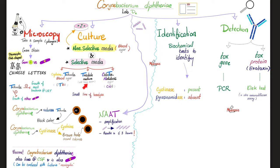We also have Tinsdale medium — you will need to add some horse serum to make it stable. The most practical medium to use is colistin nalidixic acid agar, or CNA. You can also use a DNA test — nucleic acid amplification test — to find diphtheria. For biochemical identification, Corynebacterium diphtheriae possesses cysteinase enzyme but does not have pyrazinamidase.